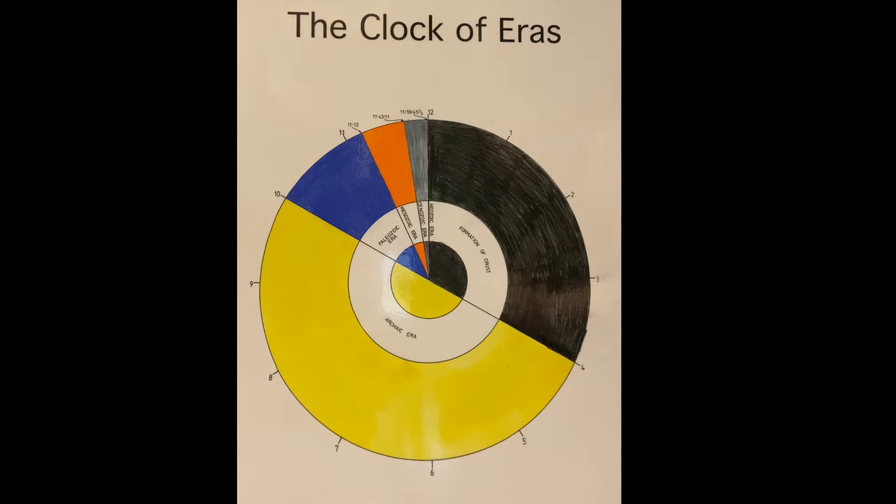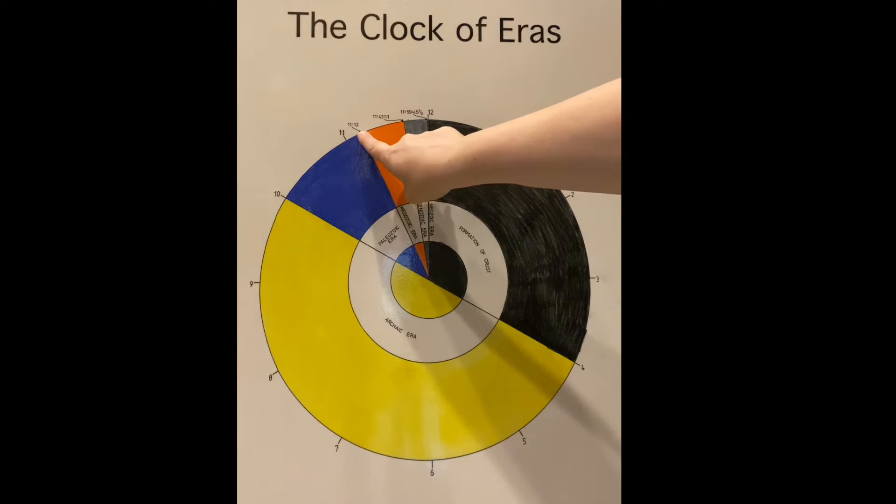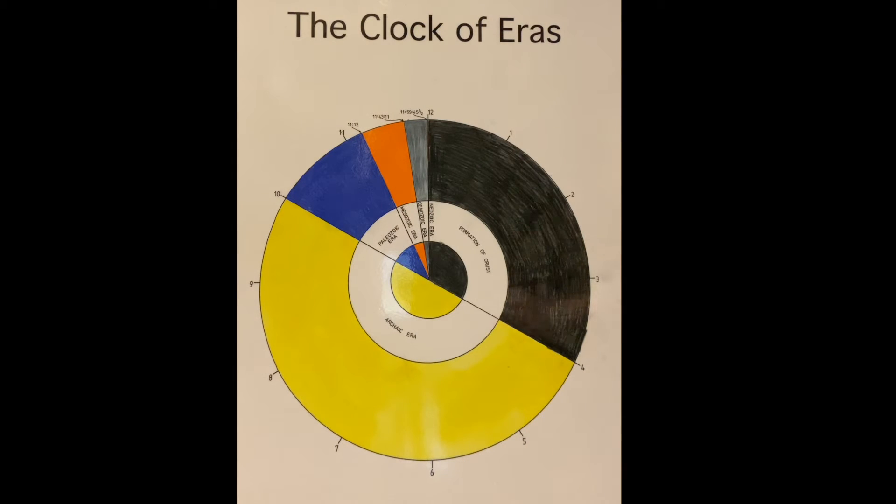Well, the Mesozoic era, the orange era starts at 11-12, and it goes until 11-43 and 11 seconds. So that is only 31 minutes and 49 seconds is how long this lasted. This didn't even last an hour, did it? So the Mesozoic era, there's a story in this word too. So meso means middle, and zoic in this word refers to animals. So you can think of it as the time of middle animal life. So this was the time that the reptiles and amphibians lived, as well as the dinosaurs.